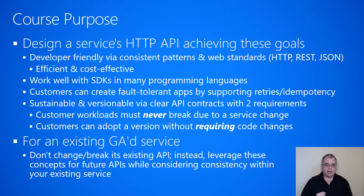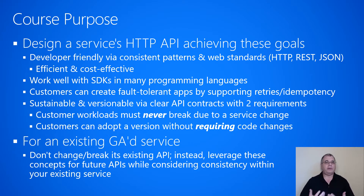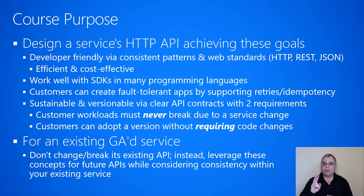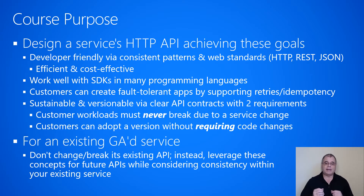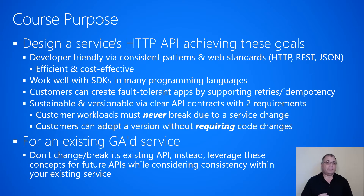We also want to design the API and service to be sustainable and versionable, so you can add features over time in a robust way, and also so clients can easily adopt new features. We'll accomplish this by defining clear API contracts for your service, and those contracts have two main requirements. The first requirement is that as you update your service, customer workloads currently dependent on your service can never break due to a change — we typically accomplish this by having clients call into a particular API version.